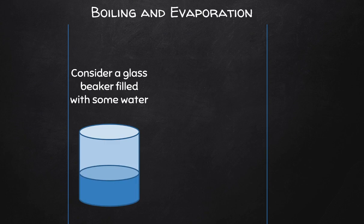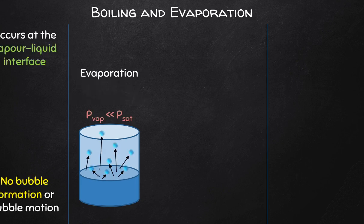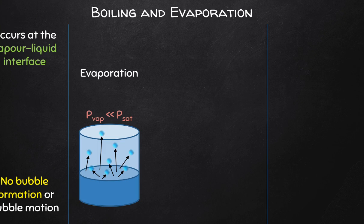Boiling is similar to evaporation in that a liquid transitions into its gaseous phase, but there are distinctions between these two phenomena. Evaporation occurs at the gas-liquid interface when the liquid's vapor pressure is below the saturation pressure, and no bubbles form within the liquid. It is at the liquid-gas interface that evaporation occurs, probably because the air is below the saturation level of the maximum water vapor it can hold.